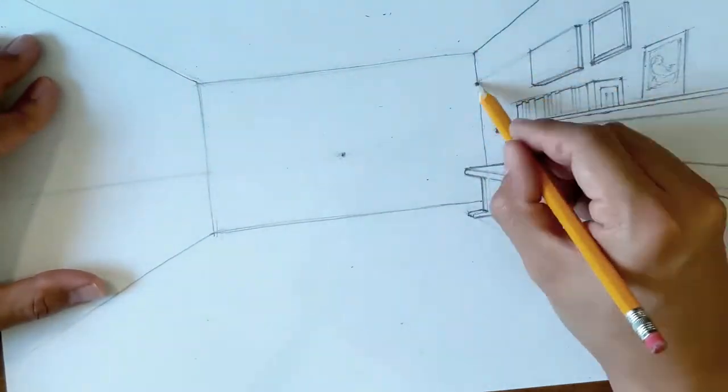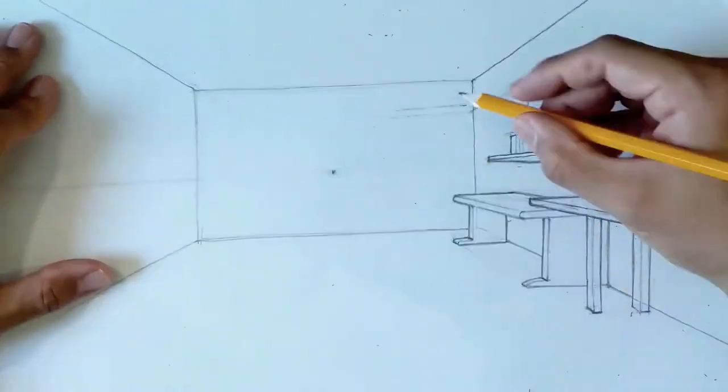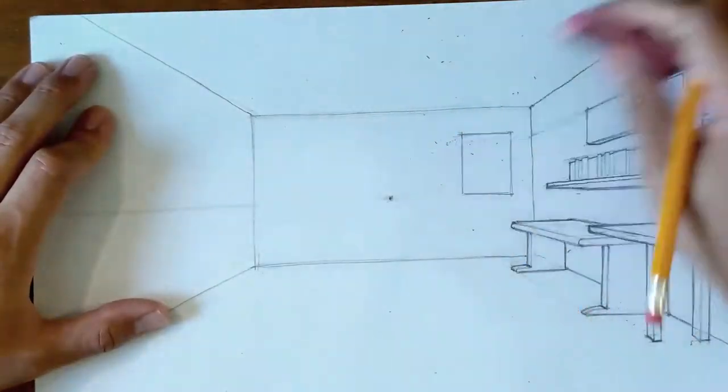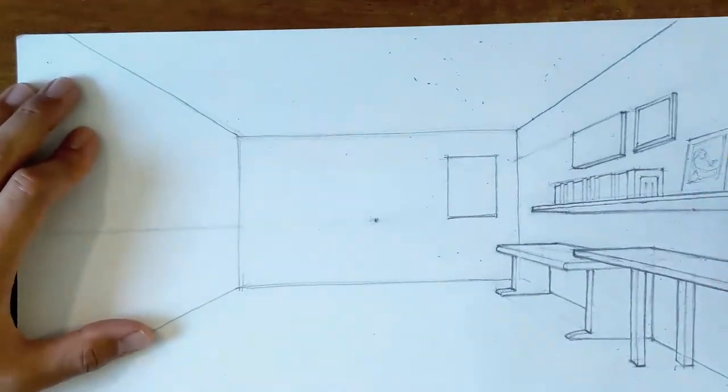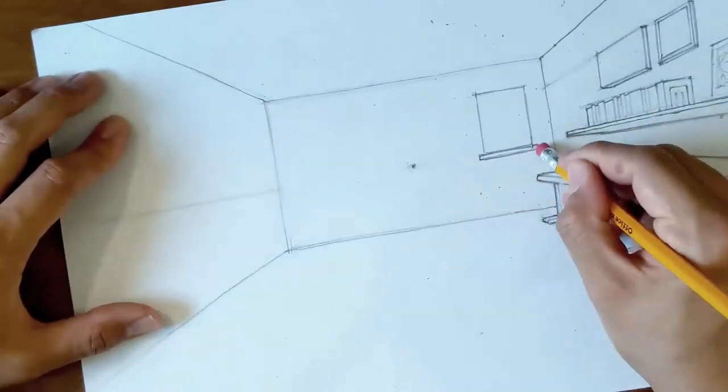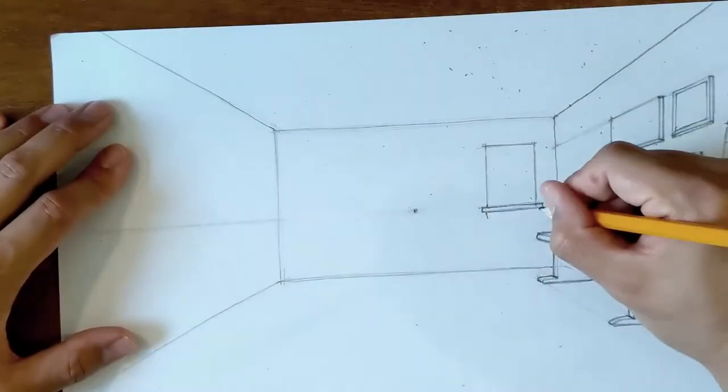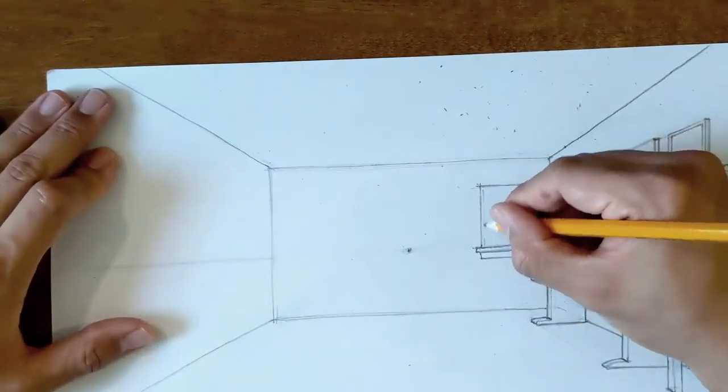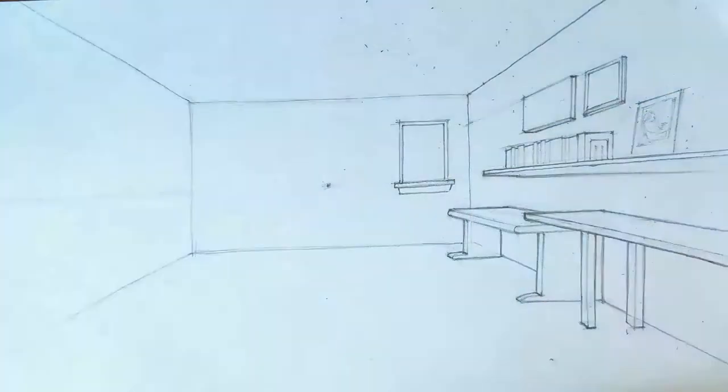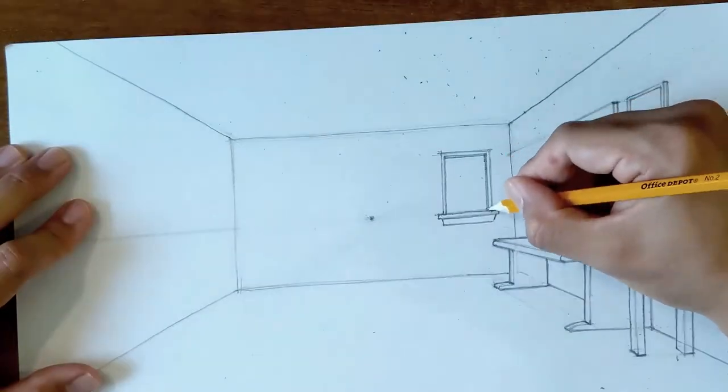Now here I'm using the top of those paintings to estimate where the top of my first window is. I drew a line, a construction line, that was receding back into the vanishing point. And then I wrapped that line around into a horizontal line. And I offset it a little bit so that the top of the window is a little bit higher.